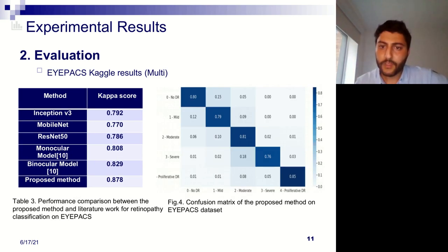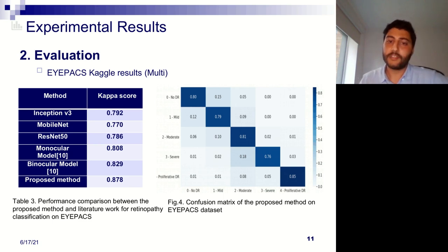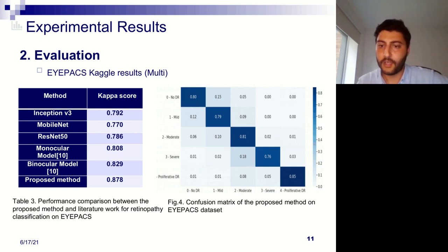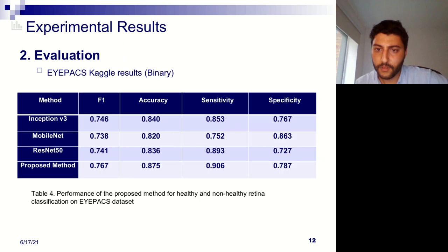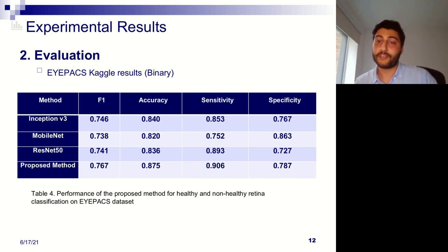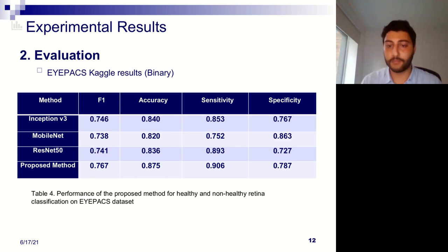For the second dataset, a recent paper used a different approach with the same settings and data. Our method outperformed it in terms of the kappa score. The confusion matrix for each class is also shown. For binary classification, the model shows strong performance with good potential for clinical application as a decision support system in the future.